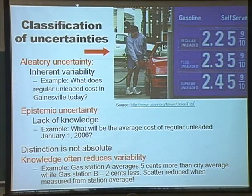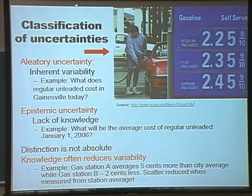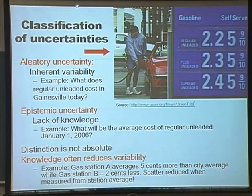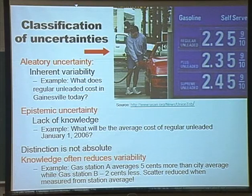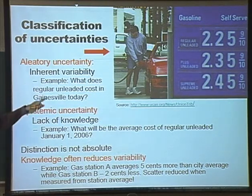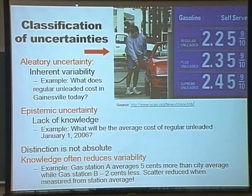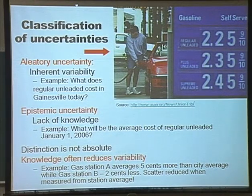Here is the jargon that I expect you to remember: the division into aleatory uncertainty and epistemic uncertainty. Since those words are not something you'll use in everyday conversation, you want to think of aleatory uncertainty as inherent variability — inherent essentially means that things just don't repeat themselves, and there is nothing that you can do about it.